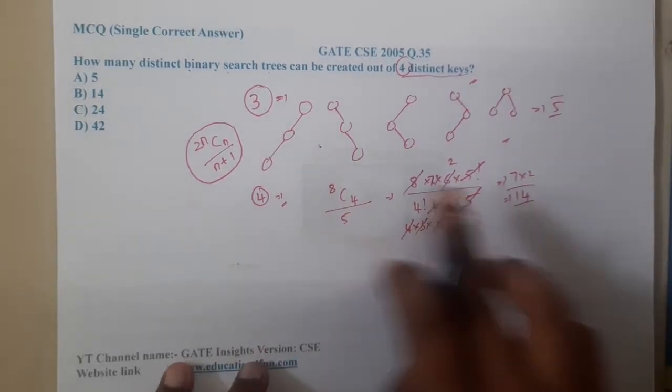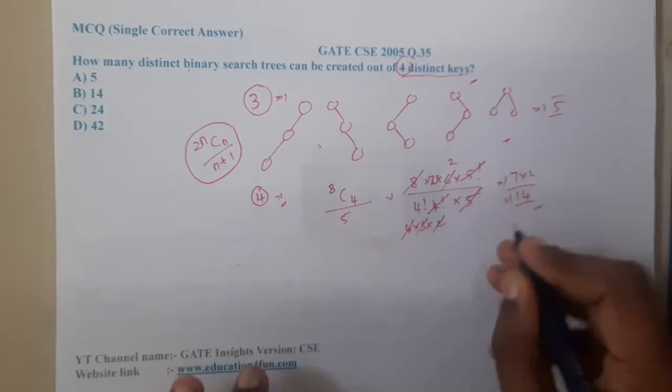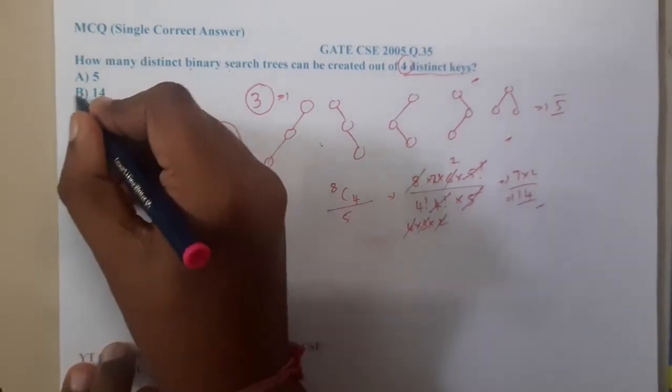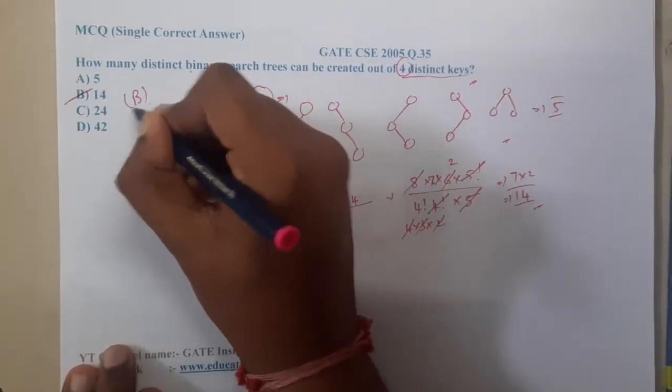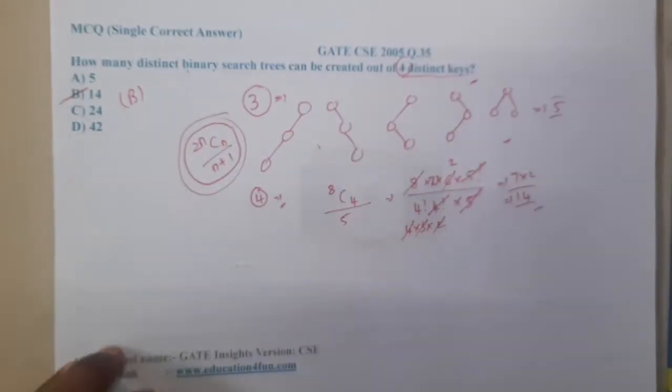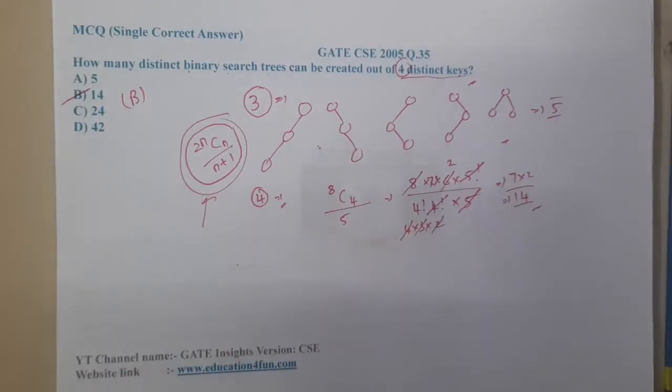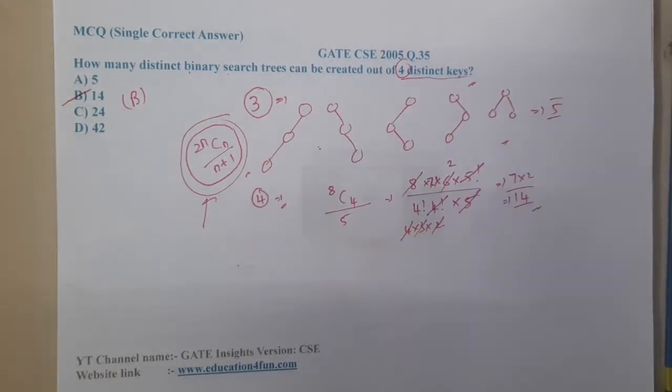So if you are free and if you want to try it out, you can just start drawing the trees. You will get exactly 14. So I hope everyone got a clear idea. That is the reason why few formulas we should remember, because we cannot derive this in the examination.